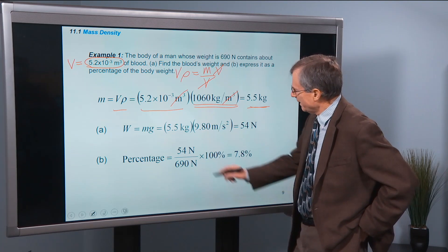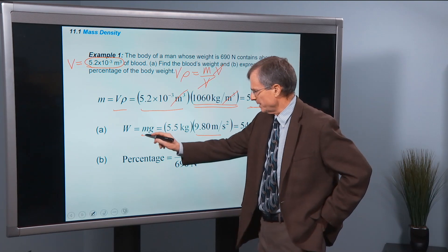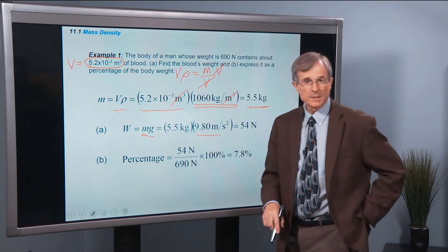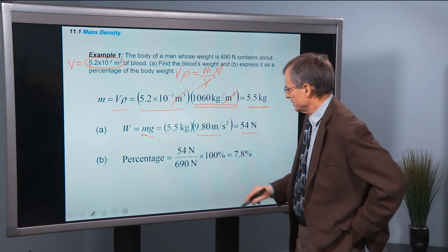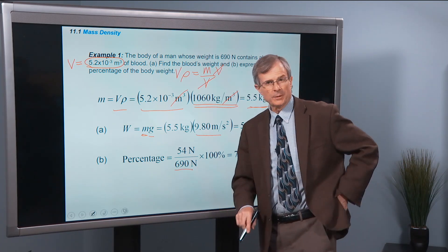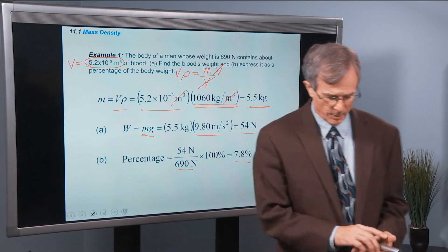So the weight of that 5.5 kilograms can be found by multiplying the mass times the acceleration of gravity. It's 54 newtons versus 690 newtons for the weight of the whole body. It's about 8% of the body weight.